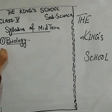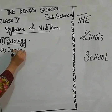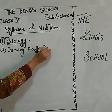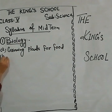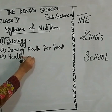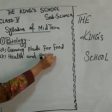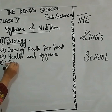Biology includes three chapters. The first chapter is 'Growing Plants for Food.' The second chapter is 'Health and Hygiene.' The next chapter is 'Safety and First Aid.' Students, copy all these syllabus topics in your science journal.